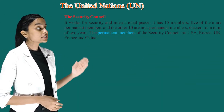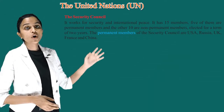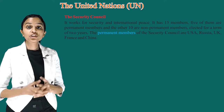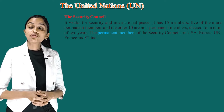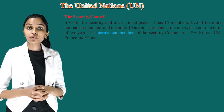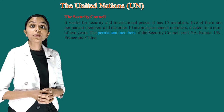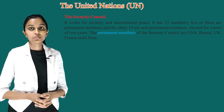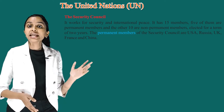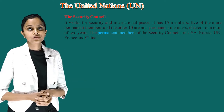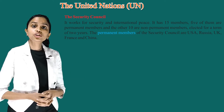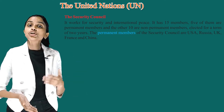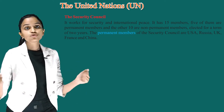The second is the Security Council. It works for security and international peace. It has 15 members — 5 of them are permanent members and the other 10 are non-permanent members, elected for a term of 2 years. The permanent members of the Security Council are USA, Russia, UK, France and China.